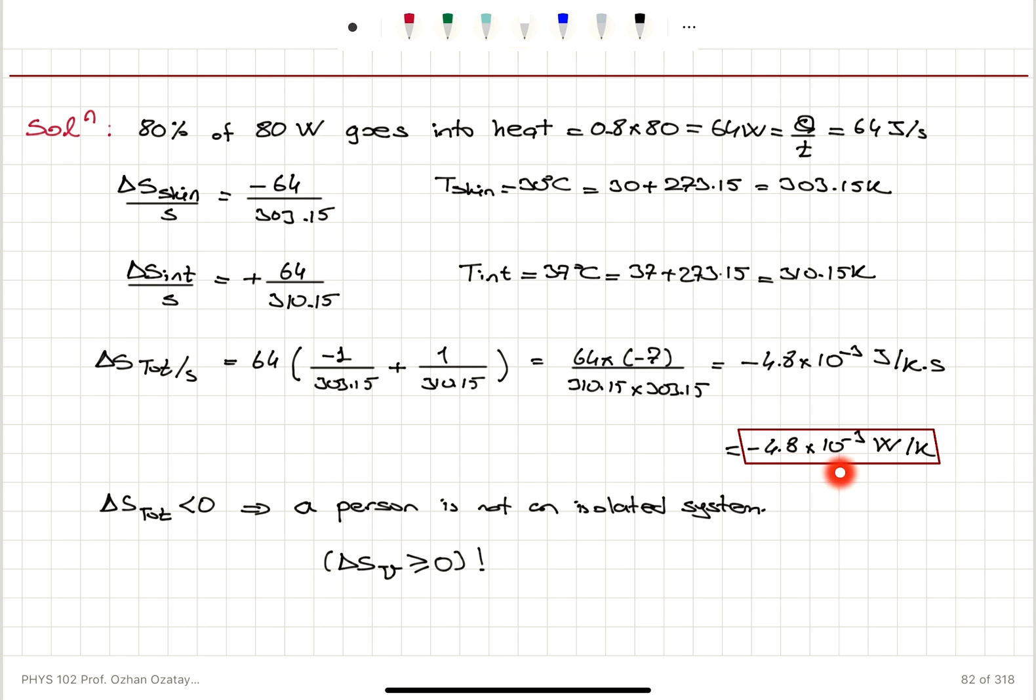Delta S total is the sum of these two, which is minus 4.8, 10 to minus 3 watts per Kelvin. But it is negative, but since a person is not an isolated system, this doesn't imply that delta S of the universe is negative. If you consider the energy provided to the ambient, the ambient temperature and absorption of this energy by the ambient, you would find delta S of the universe is positive. So this result does not violate the second law of thermodynamics.